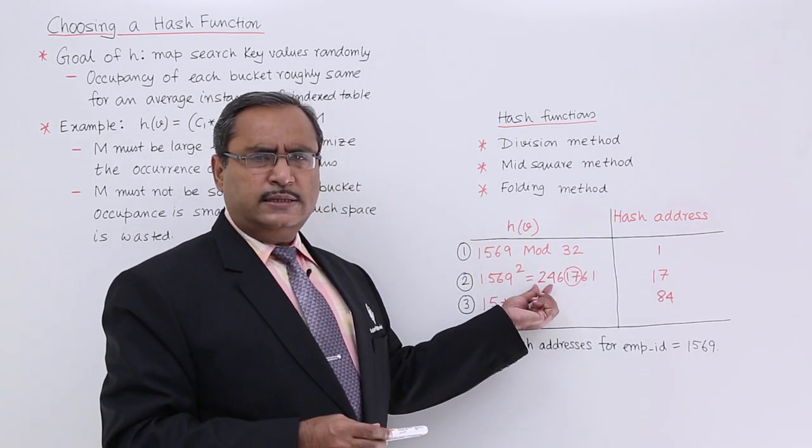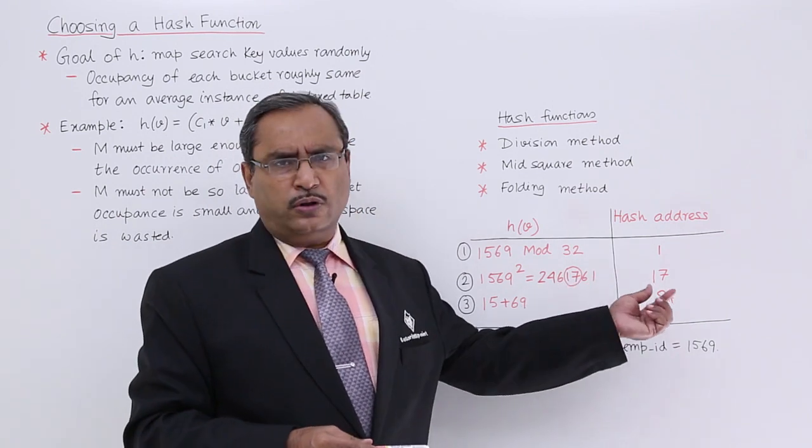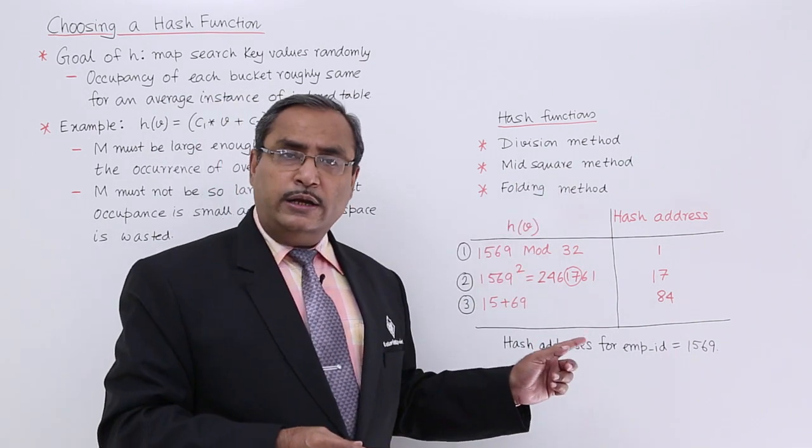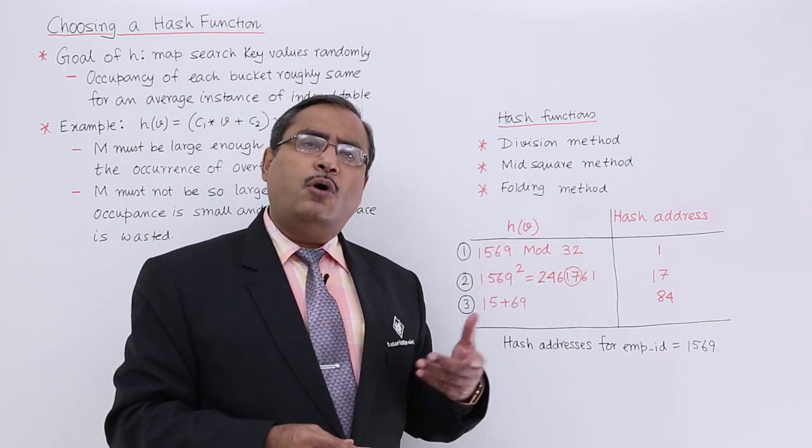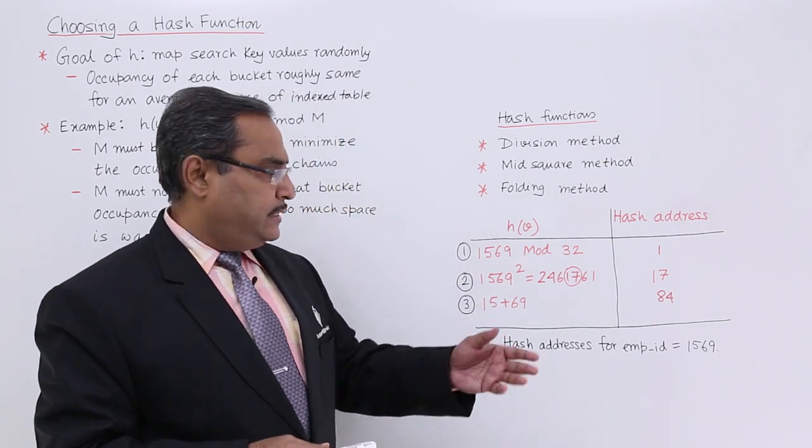Also, I can discard the first two, I can discard the last three, I can take 61 also. If we select this mid square method accordingly then that will be applicable for all the employee ids which are going to be stored on the hash index.